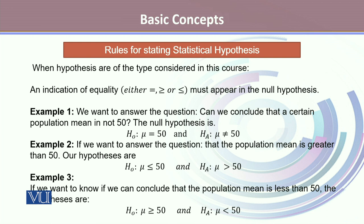In example two, if we want to conclude that the population mean is greater than 50, then the null hypothesis — which must contain the sign of equality — is H0: μ ≤ 50, against the alternative hypothesis HA: μ > 50. In example three, if we want to conclude that the population mean is less than 50, the hypotheses are: null hypothesis H0: μ ≥ 50, and alternative hypothesis HA: μ < 50.